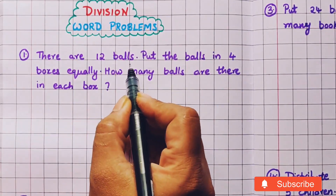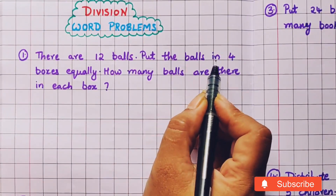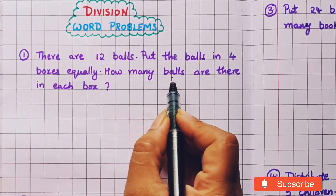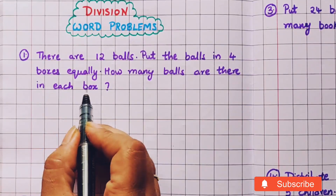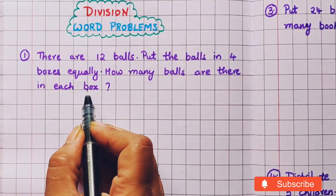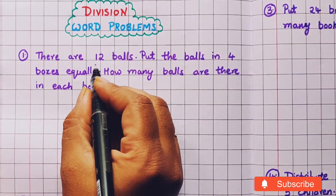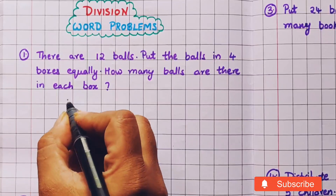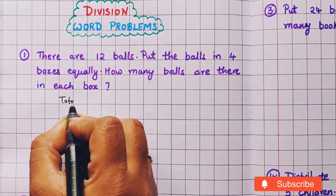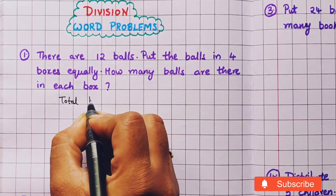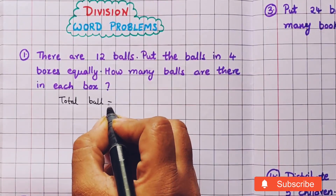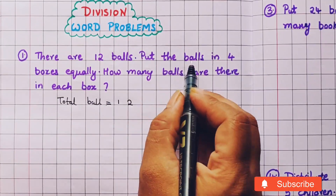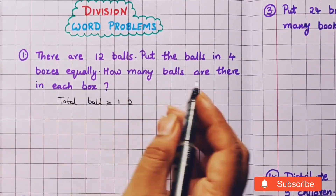There are 12 balls. Put the balls in 4 boxes equally. How many balls are there in each box? So, total balls are 12.